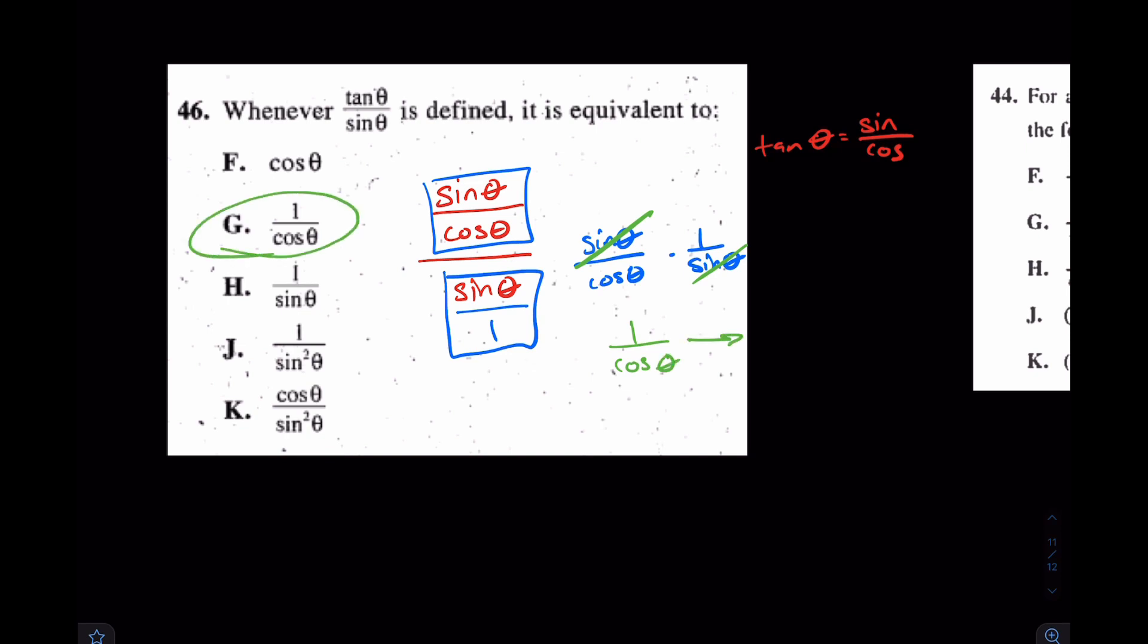In fact, if they had put secant theta there, that also would have been the right answer choice, because remember, secant is equal to 1 over cosine. That's going to come in pretty handy in a little bit. Let's keep going.